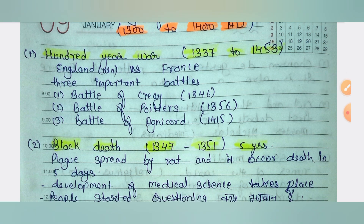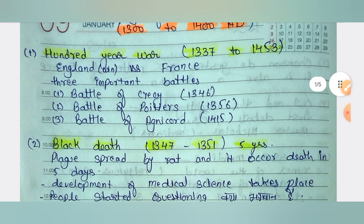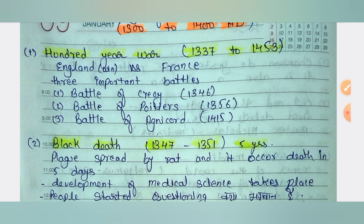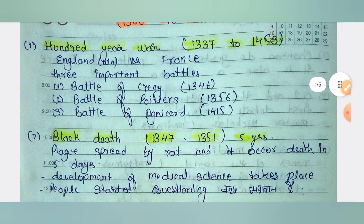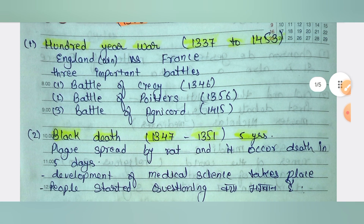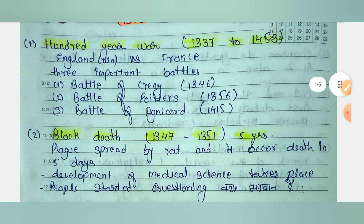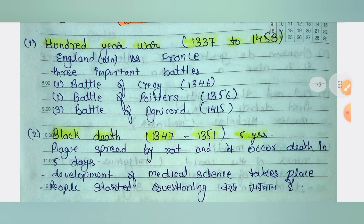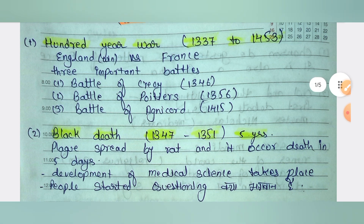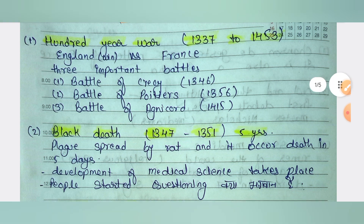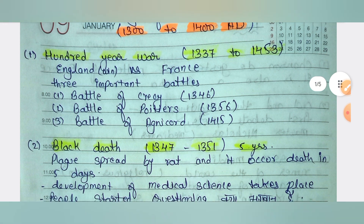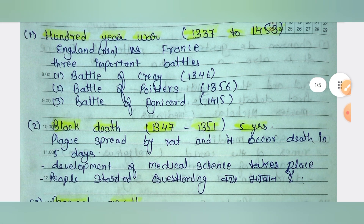You have to remember that. This war helped in creating an English identity for England and the English language. The war coincided with the time of the Black Death in the age of Chaucer, which occurred from 1347 to 1353.